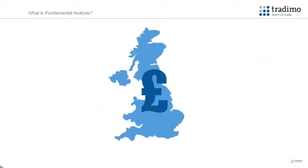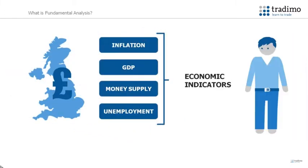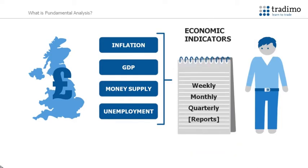Fundamental analysis involves studying the economics of a country and determining the effect this has on the value of its currency. There are economic indicators that traders can observe in order to determine the strength of an economy. They are released as reports at certain times, and they can be released weekly, monthly or quarterly, depending on the report.